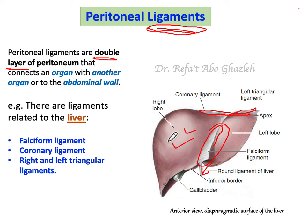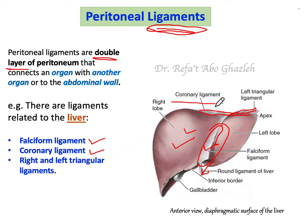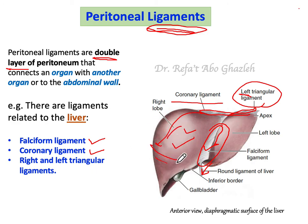Let us start talking about the ligaments of the liver that are formed by peritoneum. In this case I would talk about the falciform ligament and the coronary ligament, and the right and left triangular ligaments. You can see the left one now; the right one should be here in the back.